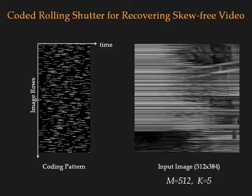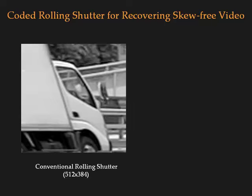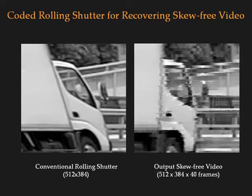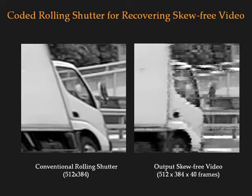Here are some preliminary results. On the left is the random coding pattern, and on the right is the input image. Here is an image captured with conventional rolling shutter, which has a very large amount of skew. Here is the output skew-free video. Although the skew is removed, there are still many flickering artifacts in the output video.